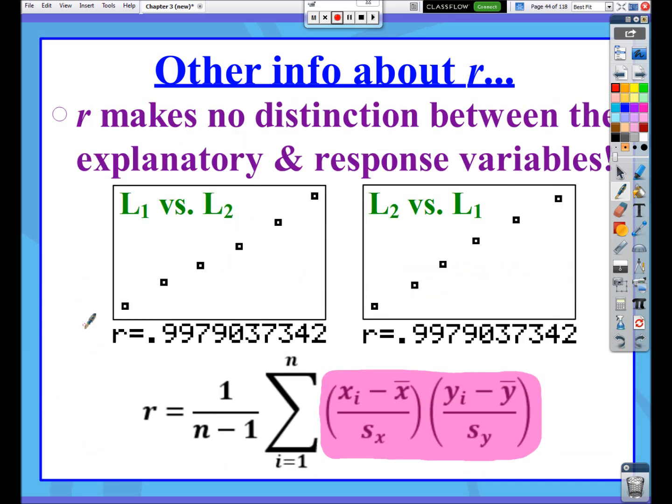Correlation makes no distinction between your explanatory and response variables. So if I took my scatter plot and I said the explanatory is list 1 and the response is list 2, and I made a scatter plot for it, and I calculated correlation, this would be my correlation.